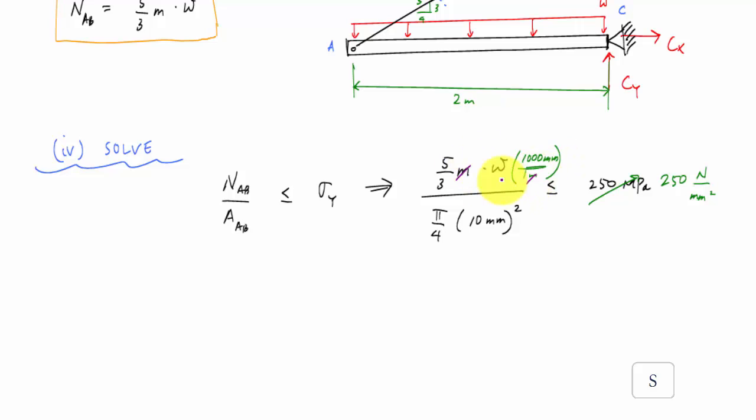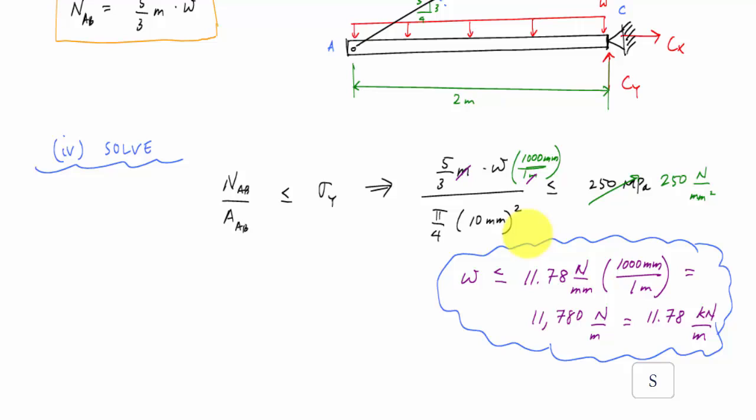The meters cancel out. And when I work this out, let's see, this would be 100 power four, this W, the distributed load will be less than or equal to 11.78 newtons per millimeter. And if I want to convert this into newtons per meter, I would multiply this by 1000 millimeters per meter, which would be equal to 11,780 newtons per meter, which is the same as 11.78 kilonewtons per meter. So this 11.78 kilonewtons per meter is the maximum load, that maximum uniformly distributed load that I could apply to the structure just before or without causing the rod or just the instant where the rod will start to yield.